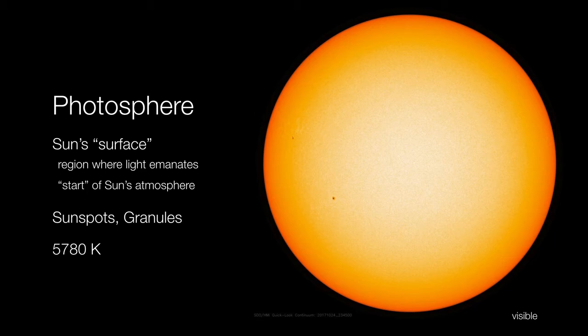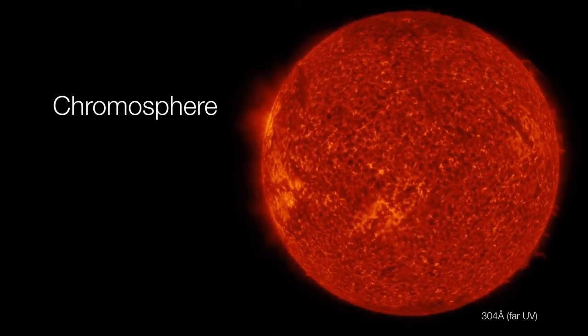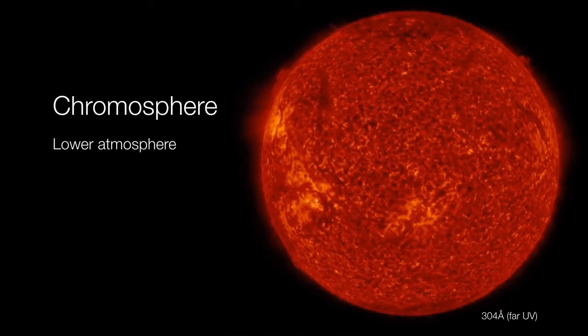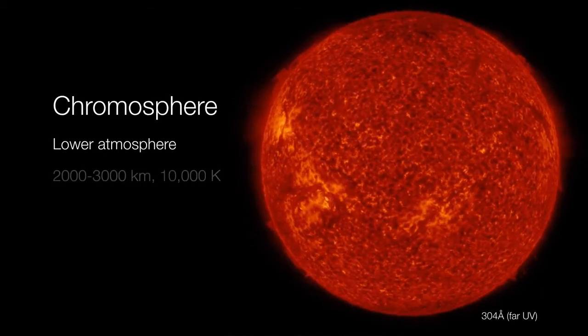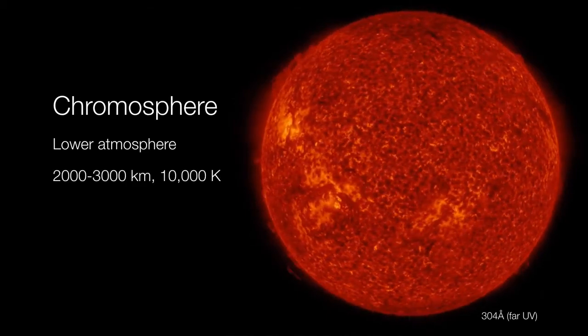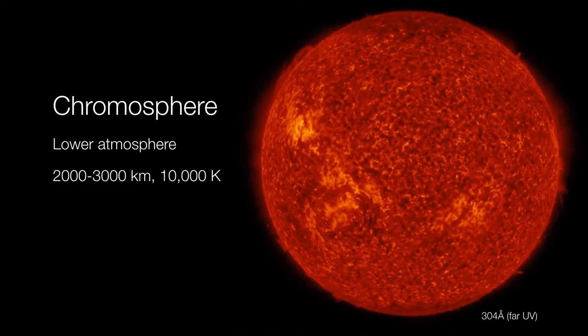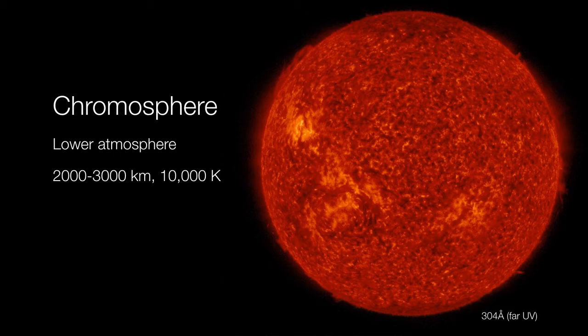But another way to think about the photosphere is that it is really the region where the Sun now transitions into its atmosphere. So the lower part of the atmosphere is called the chromosphere. Now it's worth mentioning that in this chromospheric region, or the lower atmosphere, we're only talking about about 2,000 maybe to 3,000 kilometers in thickness. And yet the temperature, rather than decreasing, increases.